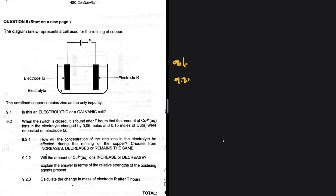Let's go back to the question statement. The diagram below represents a cell used for the refining of copper. We have electrodes Q and R, and the electrolyte. The unrefined copper contains zinc as the only impurity. We need to figure out what the anode is and what the cathode is. We need the unrefined copper at the anode so that oxidation can take place, and then copper can get deposited at the cathode.